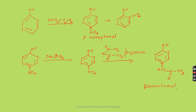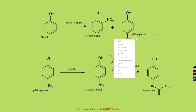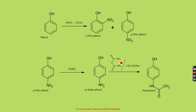So this is the conventional method of synthesis: phenol is treated with nitric acid and sulfuric acid forming paranitrophenol and orthonitrophenol. Further, paranitrophenol reacts with sodium borohydride giving para-aminophenol, which on acetylation in the presence of acetic anhydride and sodium acetate produces paracetamol.